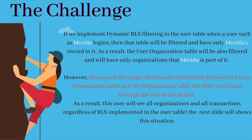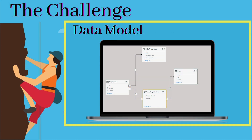Now comes the part challenge. It's not so easy to implement this kind of row level security in Power BI. If we implement dynamic RLS filtering in the user table when a user such as Merida logs in, then that table will be filtered and have only Merida's record. As a result, the user organization table will also be filtered and will have only the organizations that Merida is part of. However, because of the single directional relationship between the user organizational table and the organization table, the filter won't pass through the rest of the model.